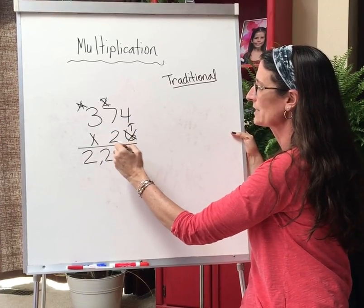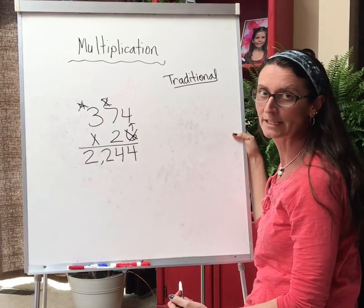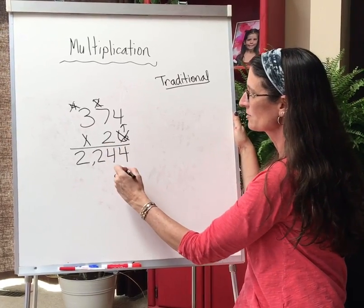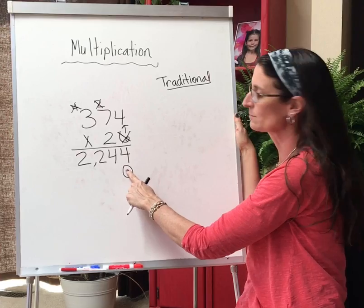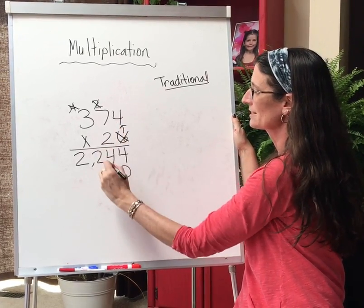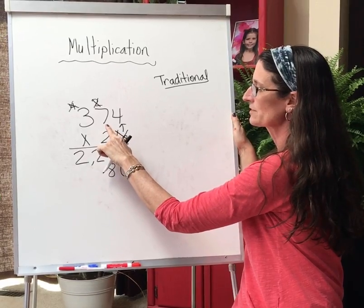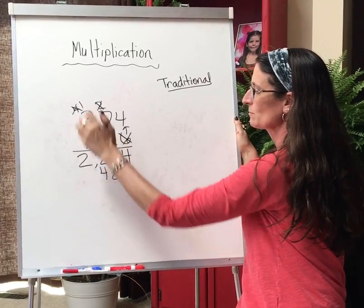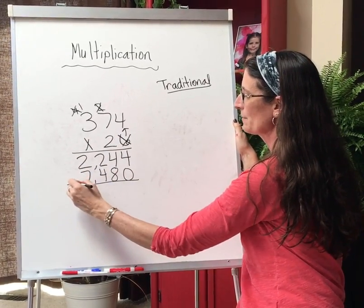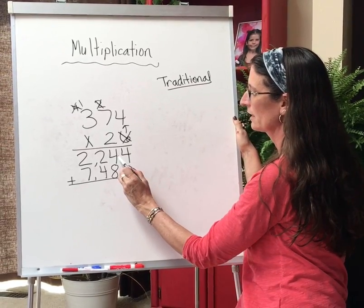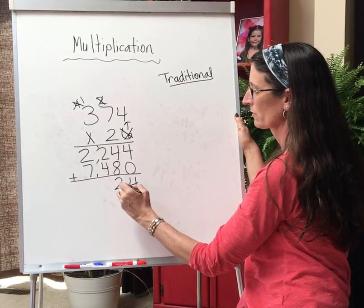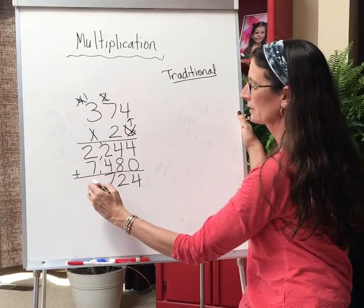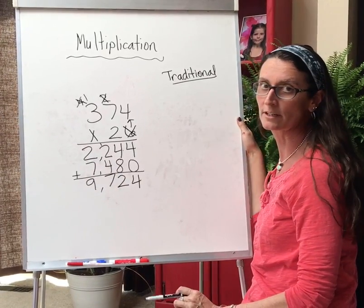374 times 26. Now we're doing the 26 part — we did the 1s, now we're in the 10s. Because my first answer is in the 10s, I have to put a place saver down here; I'm not working with the 1s anymore. So 2 times 4 is 8. 2 times 7 is 14, and I'm going to regroup. 2 times 3 is 6, and 1 more is 7. And when I add them up, I get 9,724.